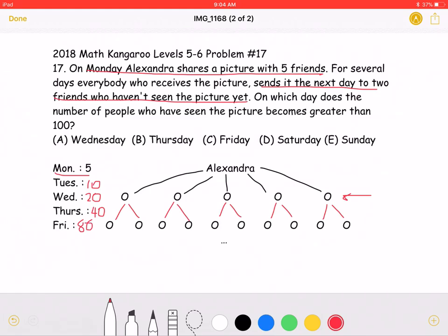The problem asks for which day the number of people who have seen the picture is greater than one hundred. As we can see, Monday through Thursday, a total of seventy-five people have seen the picture. That means that they will hit one hundred people on Friday, which is answer choice C.